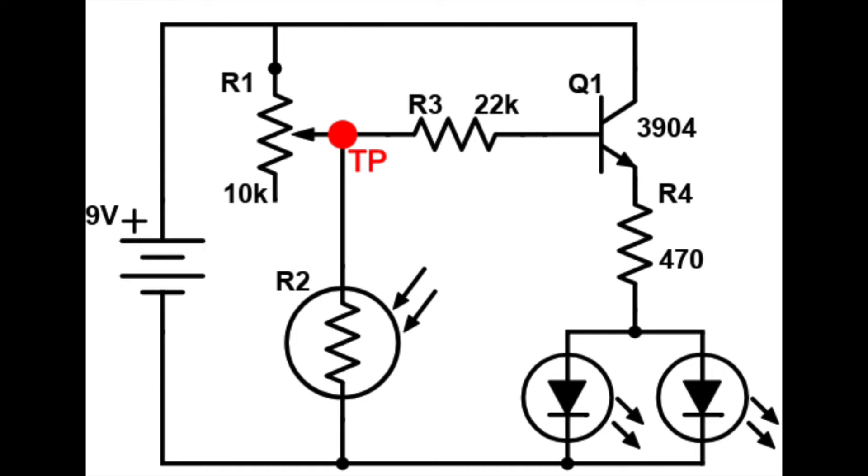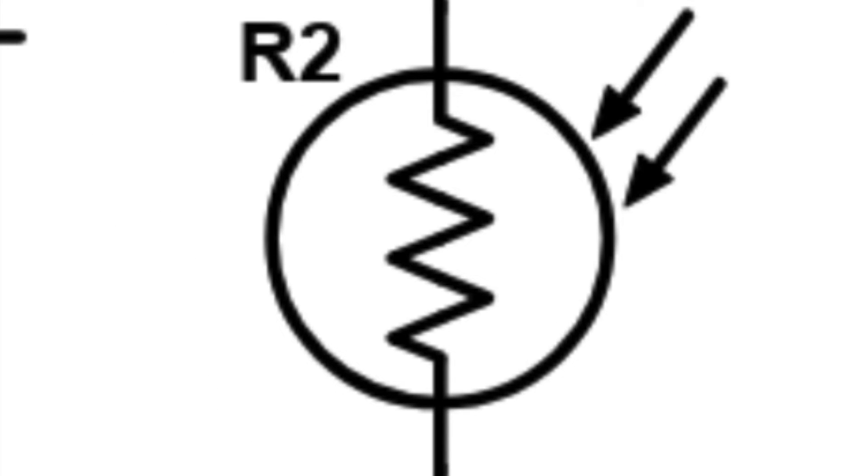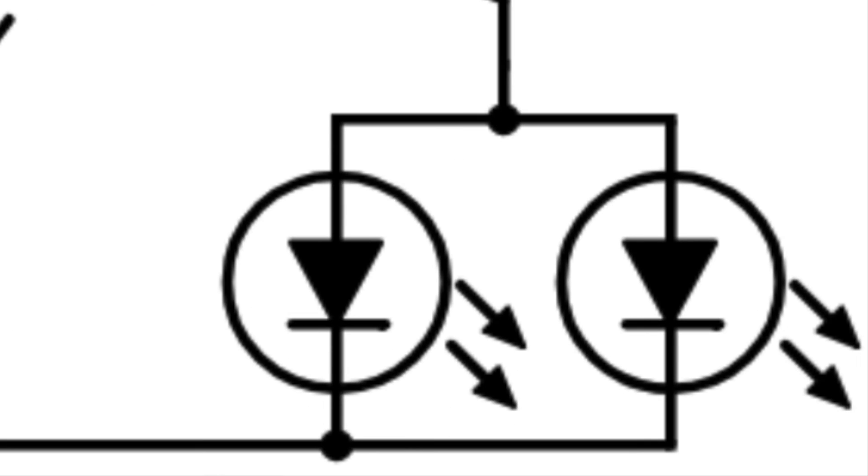This is the circuit diagram the nightlight is based on. Not including the wires, there are a total of eight components shown on the diagram: 9 to 12 volts of power, the potentiometer, the LDR, two fixed resistors, the transistor, and two LEDs.